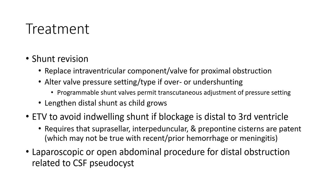Shunt revision: replace intraventricular components for proximal obstruction. Lengthen distal catheter if over 170mm. ETV to avoid further shunting when shunt peak blockage is distal to the foramen of Monro. Laparoscopic or open abdominal procedure for distal obstruction. Replace to CSF services as needed.